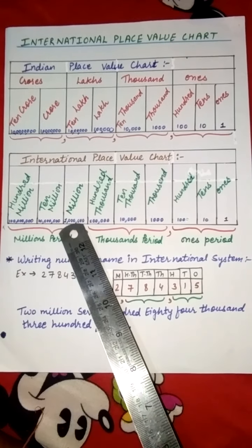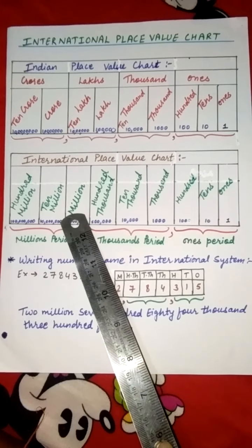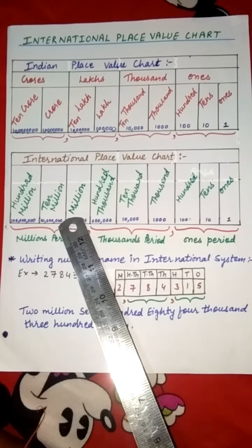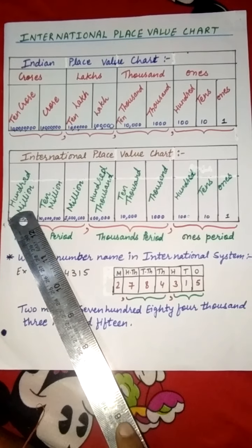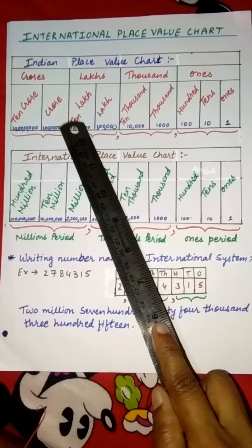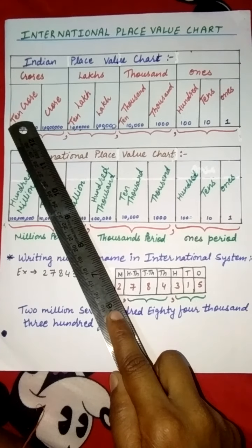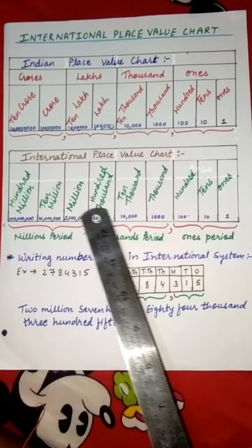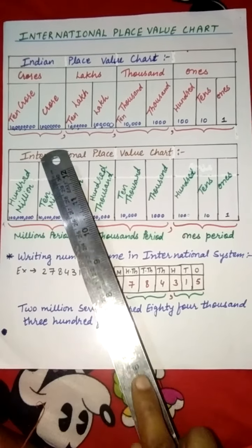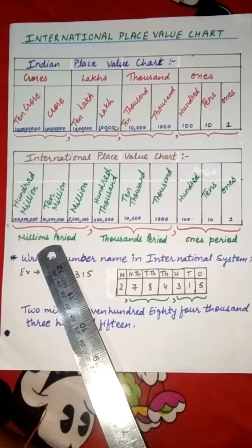Next is million, 10 million, and 100 million. In the international system, after 100,000 comes million, 10 million, and 100 million. But in the Indian chart, after lakh comes 10 lakh, crore, and 10 crore. So you can see the difference — after 100,000, million, 10 million, and 100 million will come in the international place value chart. This is called the million period.